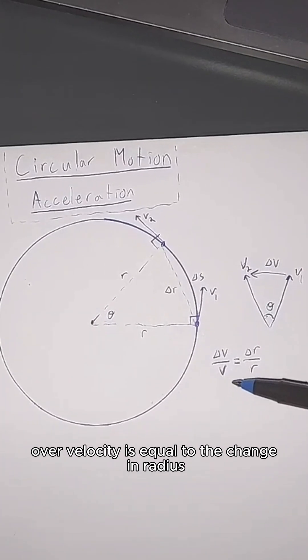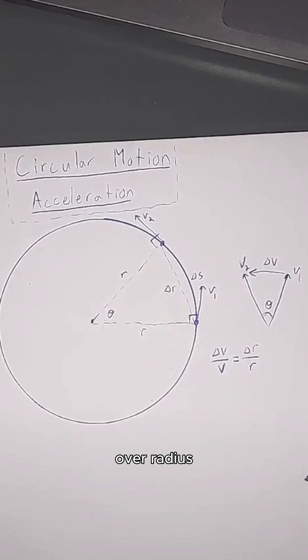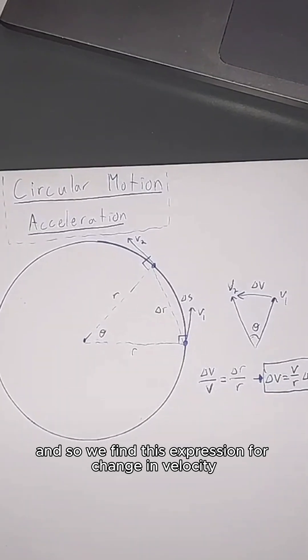And so we know the change in velocity over velocity is equal to the change in radius over radius. And so we find this expression for change in velocity.